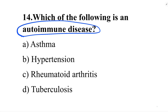Next question: which of the following is an autoimmune disease? Option A: asthma. Option B: hypertension. Option C: rheumatoid arthritis. Option D: tuberculosis. The answer is option C, rheumatoid arthritis. It is an autoimmune disease.